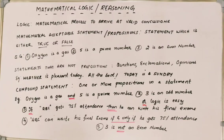Mathematical logic or mathematical reasoning. This topic majorly deals with mathematical statements which can help to arrive at valid conclusions. Logic is a process which helps us to arrive at valid conclusions. A statement can either be true or false. Such statements are called mathematically acceptable statements — they are also called propositions.